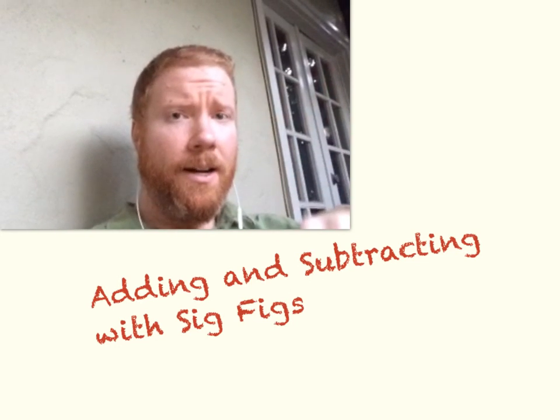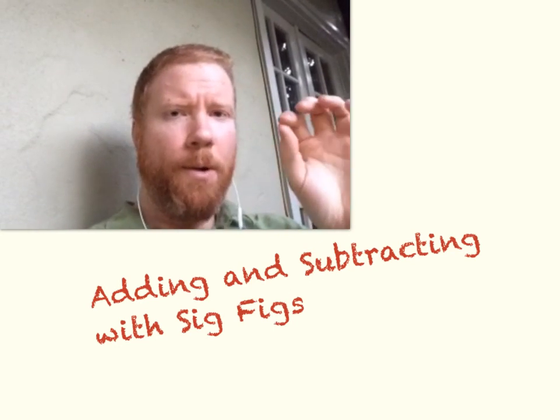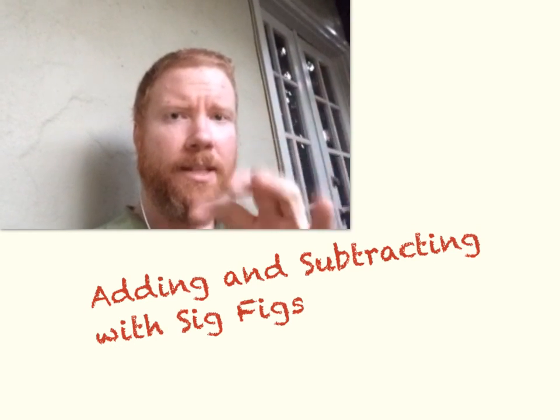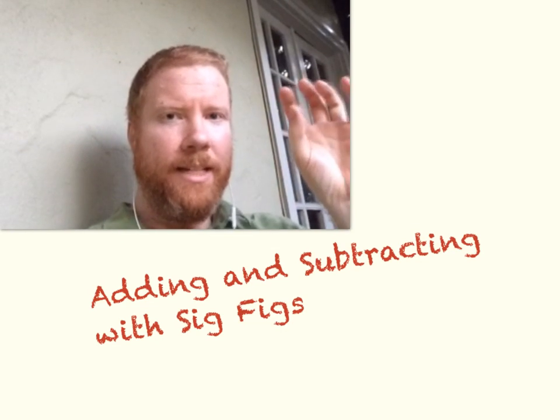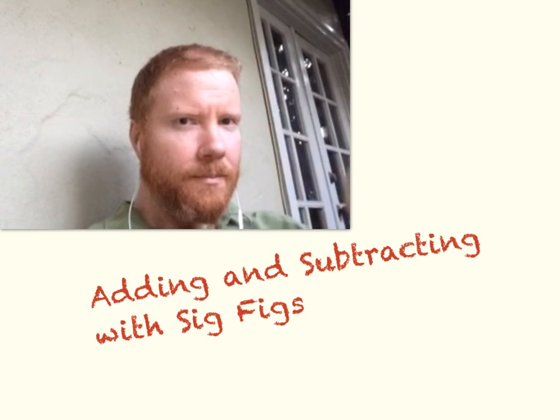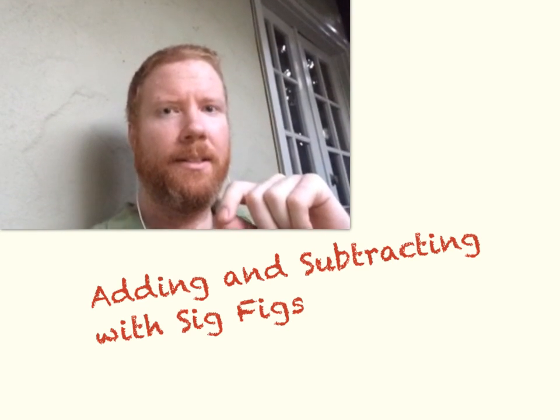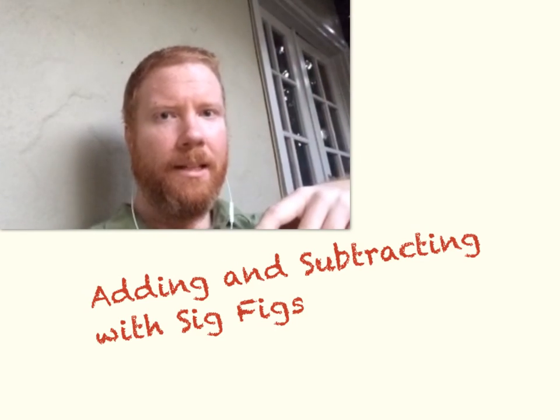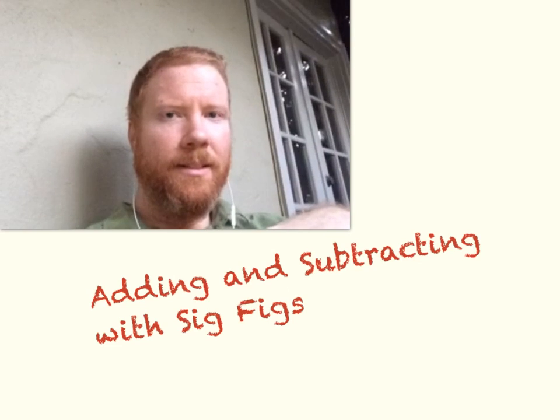So in this talk and the next one we're going to do after this, what we're doing is we're trying to figure out when we do math with these measurements, with these numbers that mean something, with these significant figures, which digits do we get to keep and which digits do we have to get rid of? In other words, which numbers still mean something after our calculations and which numbers are just kind of made up by the calculator? So let's go ahead and get started talking about the rules for adding and subtracting with sig figs.